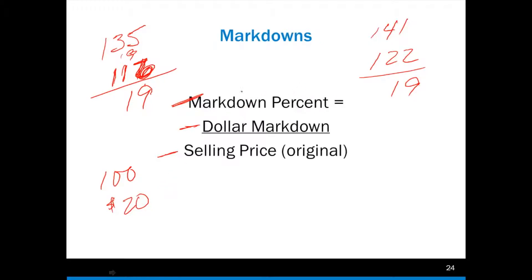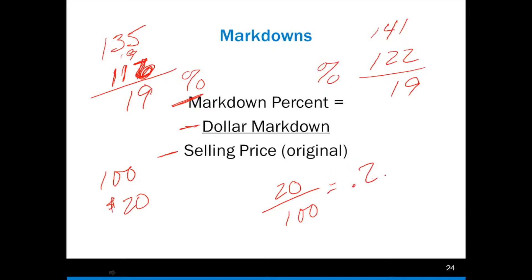That's where you want to think about percentages — what percentage is being marked down versus the other — and then you're able to compare the two to see which is the better deal because you're getting a greater percentage. If I had an item that's $100 for the original sales price and it's being marked down $20, I have my markdown as $20 and I'm dividing it by the original sales price of $100 — that's 0.2, times 100 gives me 20%. No different than doing any other percentage. The markdown percent is the dollar markdown over the original selling price.